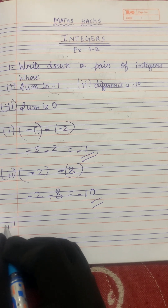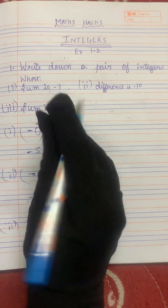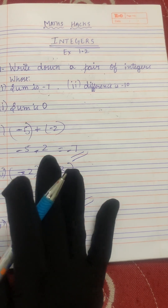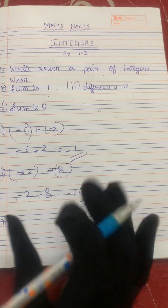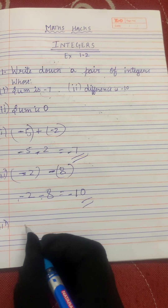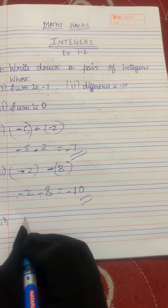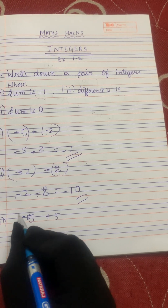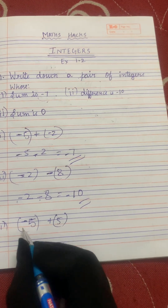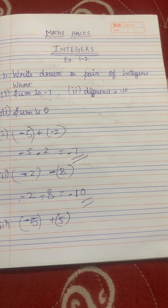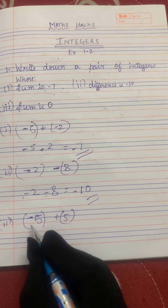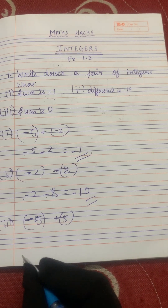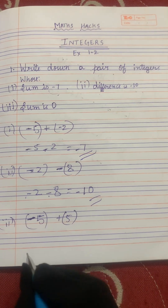Now let's solve the third question: sum is 0. If we add any two numbers, we have to get the answer as 0. We can take minus 5 plus 5. If we add these two numbers, we have to get 0. For that, we need one negative integer and one positive integer to get the answer as 0.